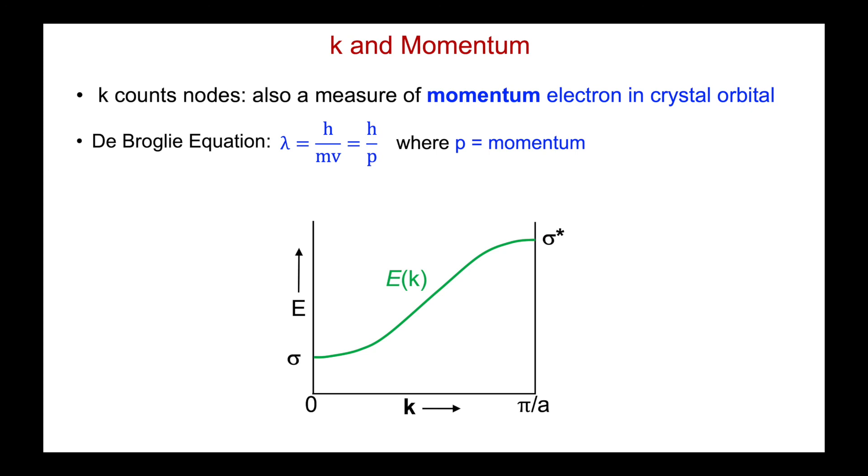Why? Well, this goes back to the de Broglie equation. If you remember from freshman chemistry, the de Broglie equation, λ equals Planck's constant over m, the mass of the particle, the electron in this case, multiplied by its velocity. Then just expressing mass times velocity as momentum, p, λ is equal to Planck's constant over p.